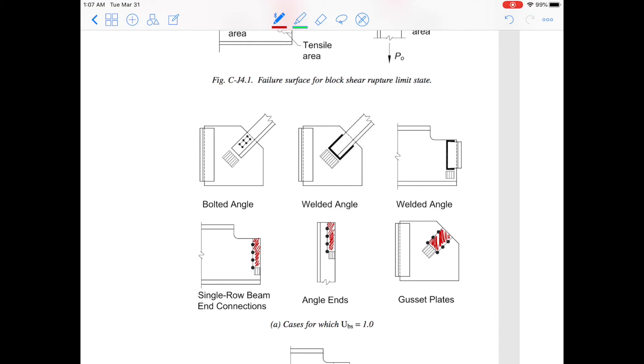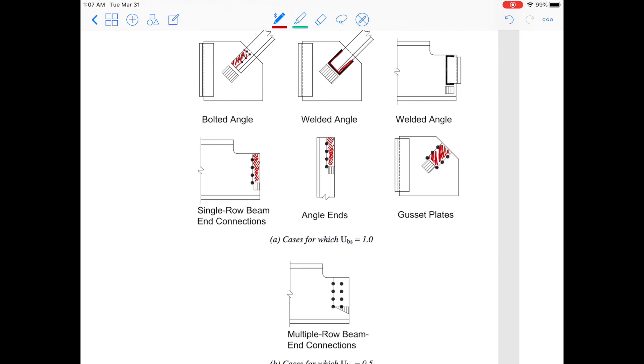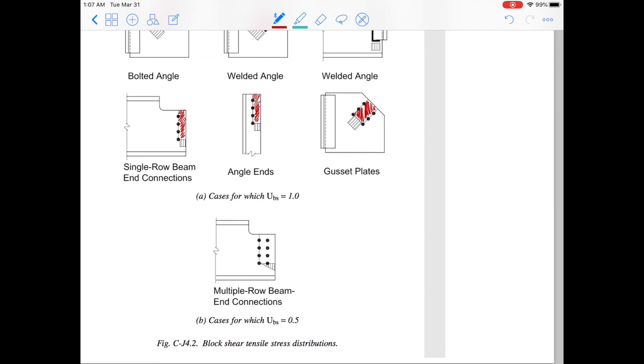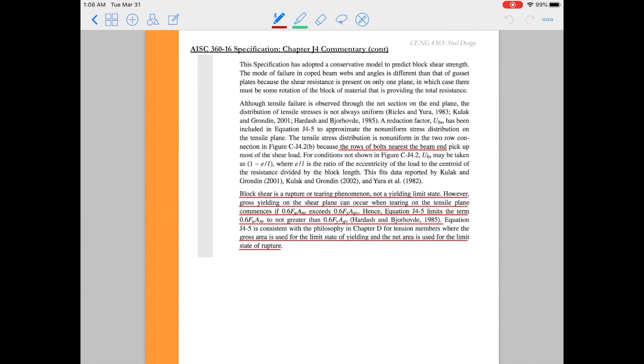But even though we've kind of limited to these cases, UBS will equal 1.0 when we have things like channel members in direct tension, maybe a WT member, or even a W shape in direct tension. All of these cases, UBS will be 1.0. Below we see the typical case when UBS is 0.5. Again, this has to do with a stress gradient on your connection. So you can see in this example where you have a double row beam end connection or any kind of multiple row beam end connection, you have a stress gradient, so therefore UBS is 0.5. Finishing out the commentary on section J4, we'll see that block shear, even though it's a rupture or tearing phenomenon, not a yielding limit state, we are concerned with gross yielding on the shear plane. And that was the reason why we included a limit to our rupture strength. So we saw that in the block shear equation.